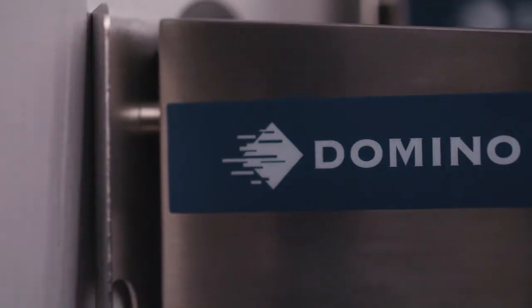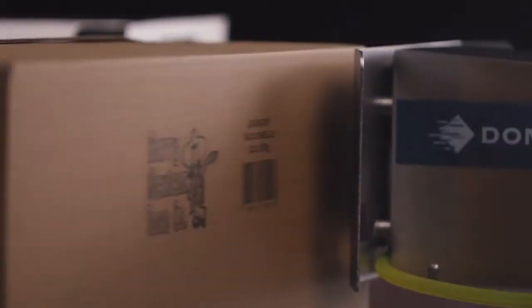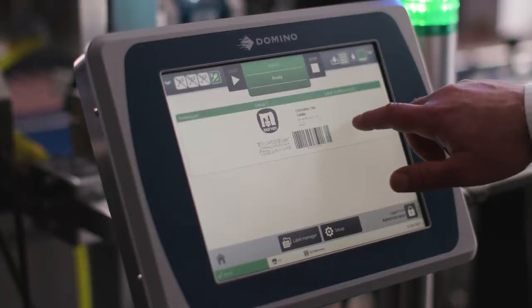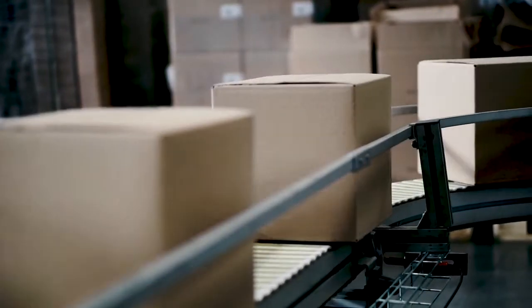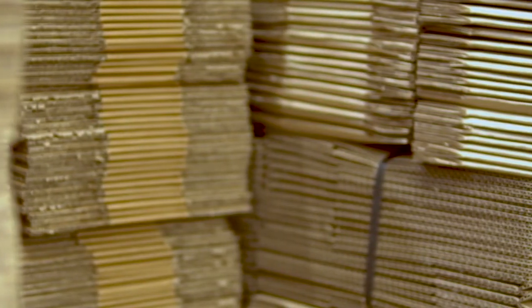The stainless steel printhead utilising vegetable oil-based inks delivers durable, grade A, GS1 compliant barcodes, text and brand logos right on to your secondary packaging. Eliminating the need for additional labels or pre-printed boxes.